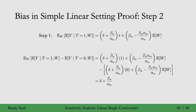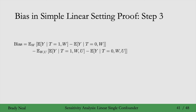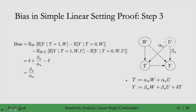In step three, we subtract off the true value — the ATE adjusting for both W and U — which gives us delta. So the confounding bias is delta plus beta_U / alpha_U minus delta, which equals beta_U over alpha_U. As a reminder, beta_U is like the edge weight from U to Y and alpha_U is like the edge weight from U to T, so by not adjusting for U we pick up confounding association flowing from T to Y proportional to beta_U / alpha_U.